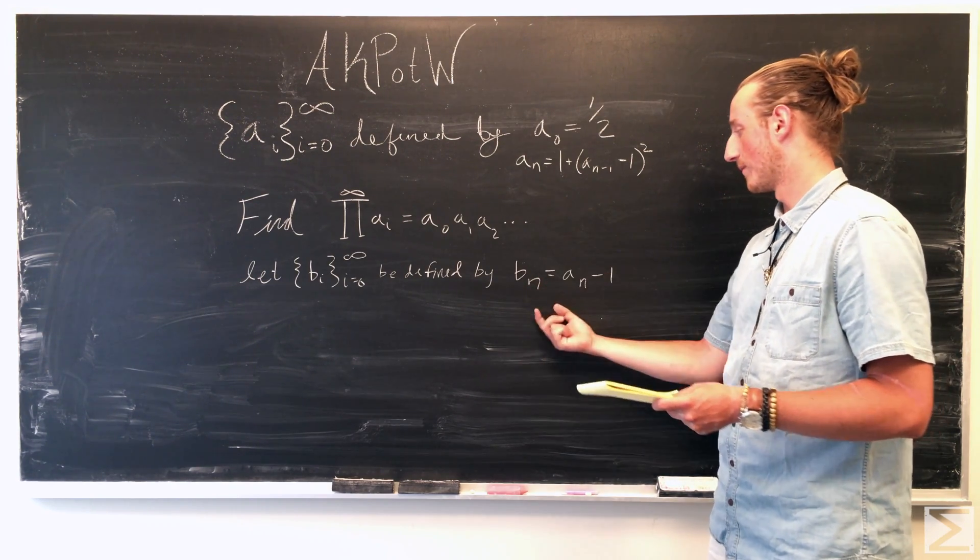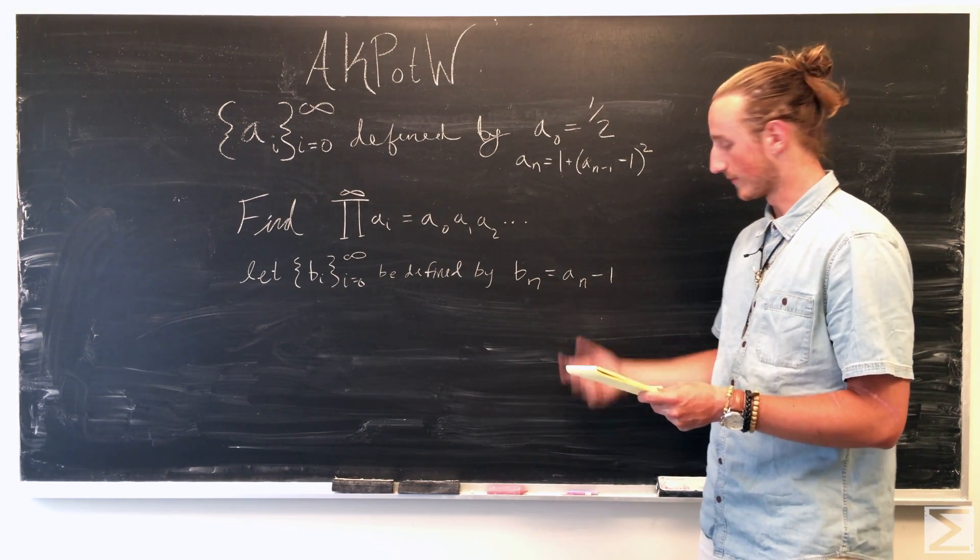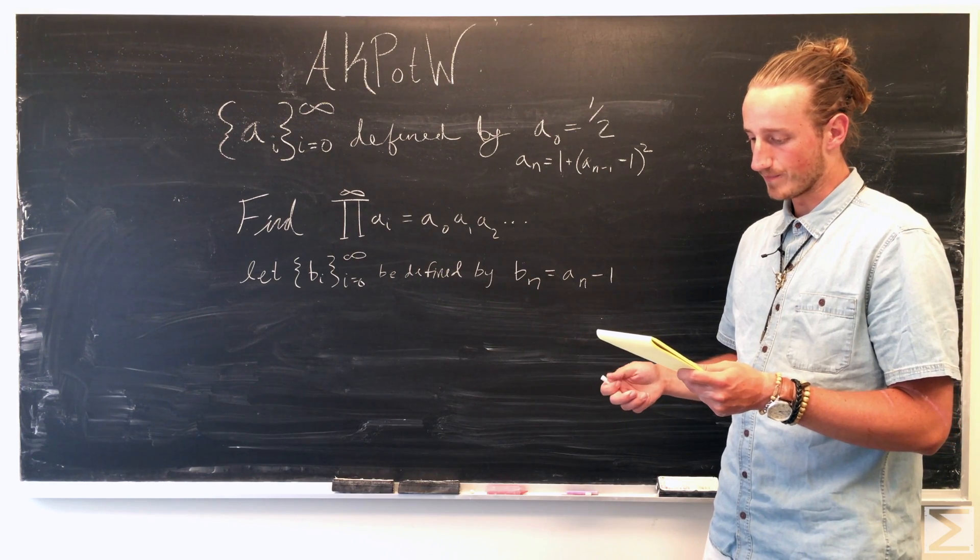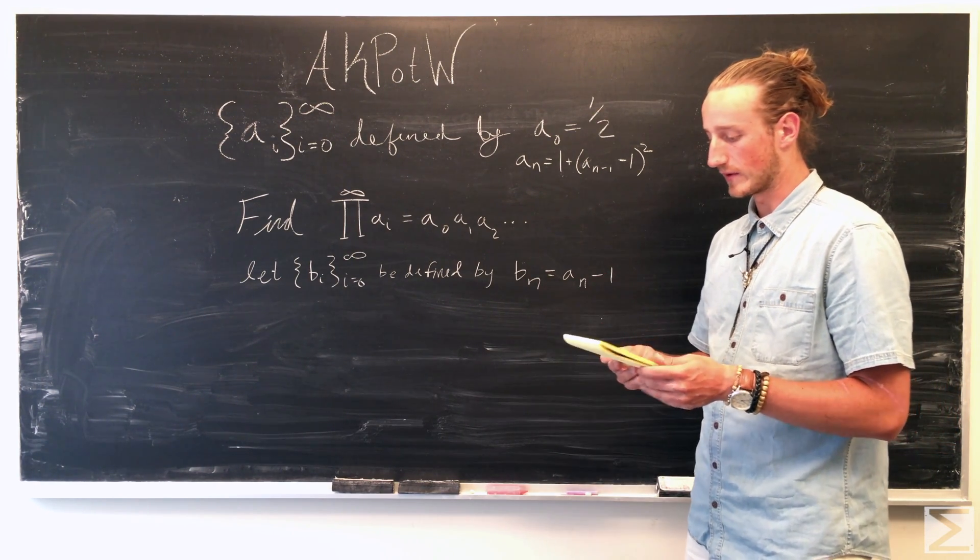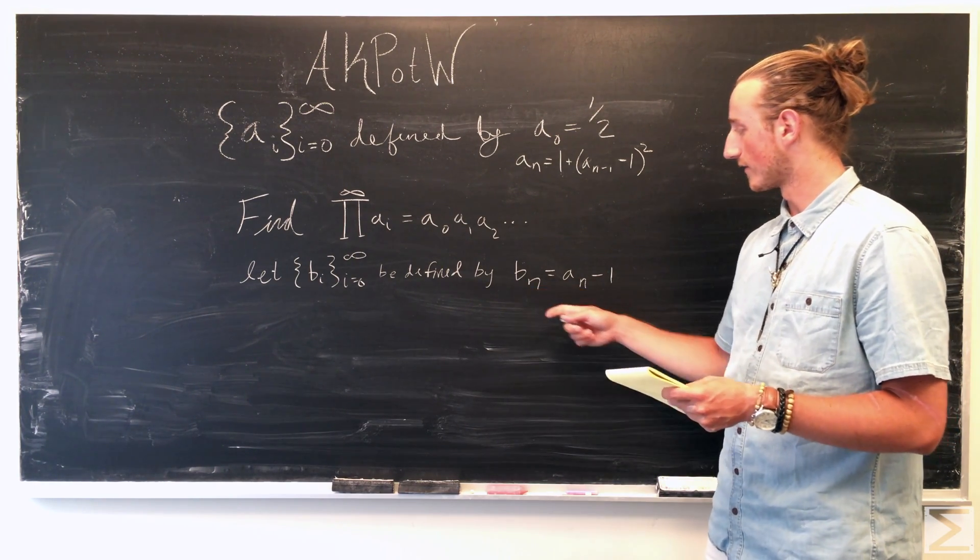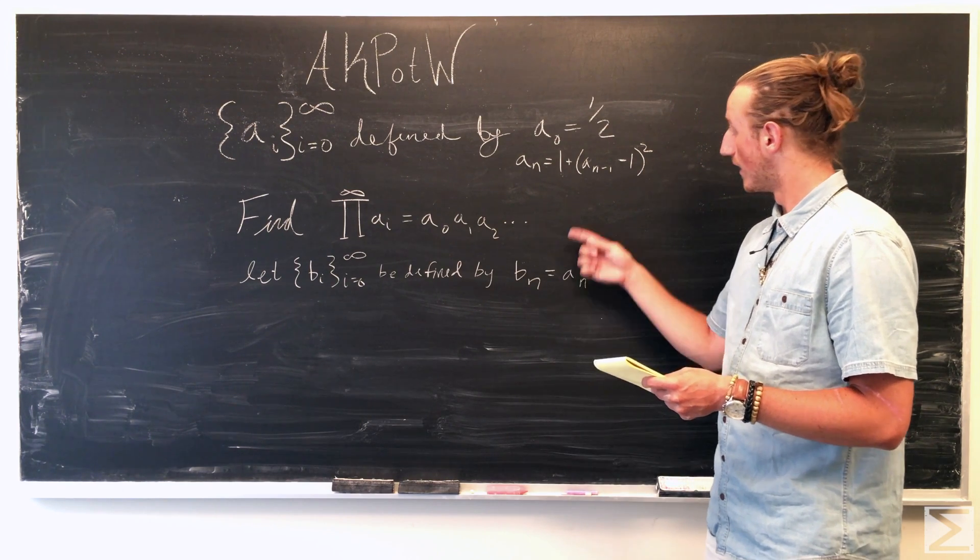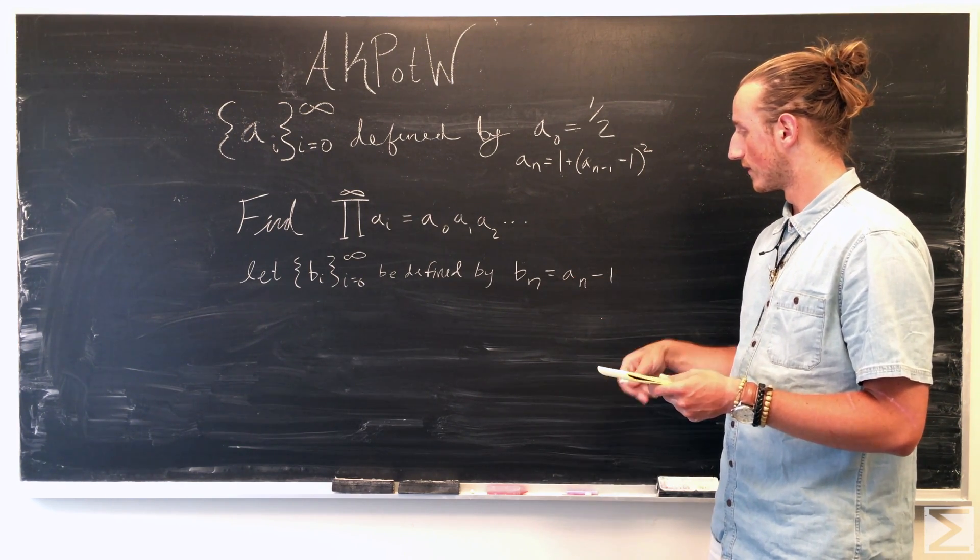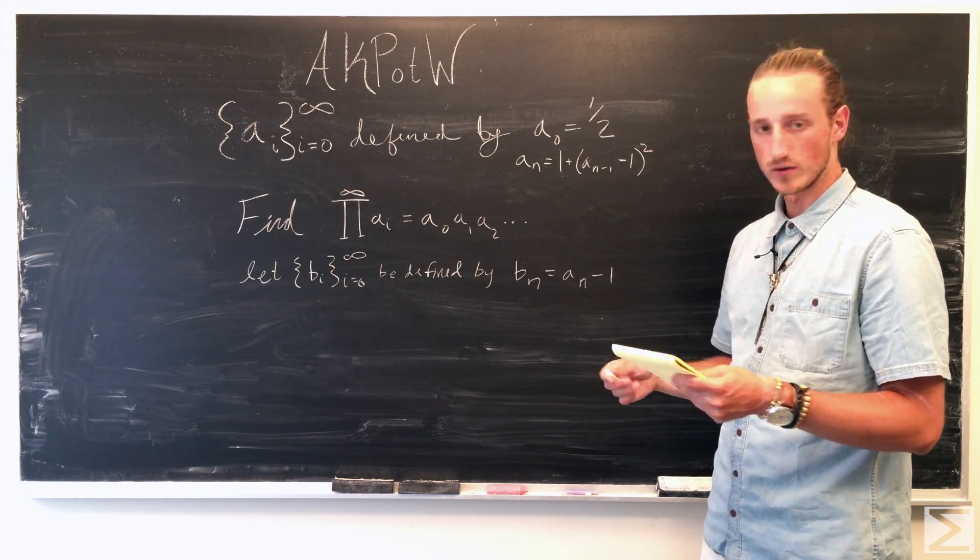So it would be b of n, and then b of n would also be the same. So by looking at this we can see that b of n is also equal to b of n minus one squared, which I can show you.